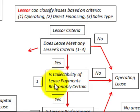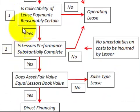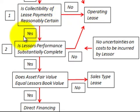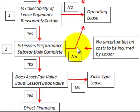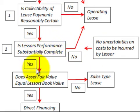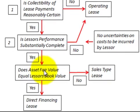If the lessor met any one of those four lessee criteria, we move on to two additional tests. The first additional test: is the collectability of the lease payments reasonably certain? If no, it's recorded as an operating lease. If yes, we move to the next test: is the lessor's performance substantially complete? This means there would be no uncertainties on the costs to be incurred by the lessor on this lease in the future. If yes, we proceed to the next decision block. If no, it's recorded as an operating lease.